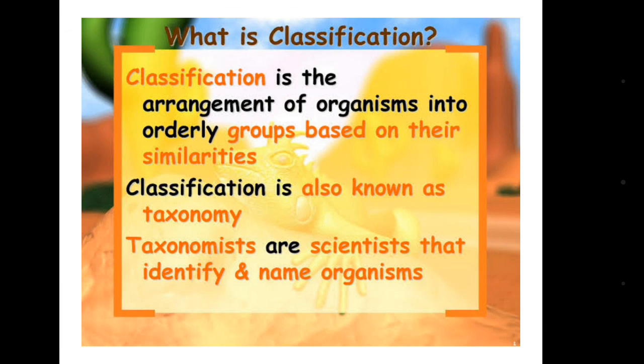What is classification? Classification is the arrangement of organisms into orderly groups based on their similarities. We have numerous animals and plants — living organisms in our world — and it is not easy to identify or recognize any unknown organism. So classification is the easiest way to identify and recognize any unknown living organism, whether it is an animal, plant, or any microorganism.